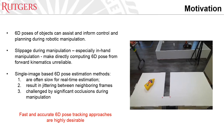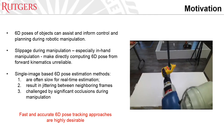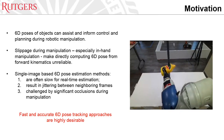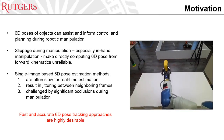First, let's look at the motivation. 6D poses of objects can assist and inform control and planning during robotic manipulation. Slippage during manipulation, especially in-hand manipulation, makes directly computing 6D-pose from forward kinematics unreliable. For example, on the right-hand side image, when the hands-off happens, the 6D-pose of the objects is not computable by only forward kinematics.